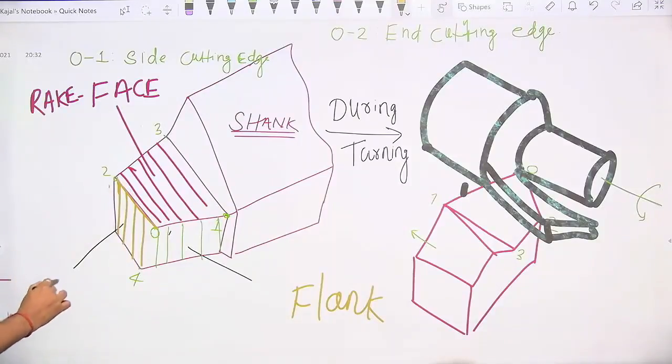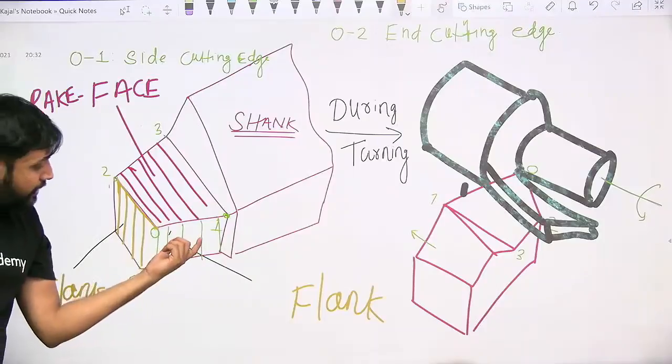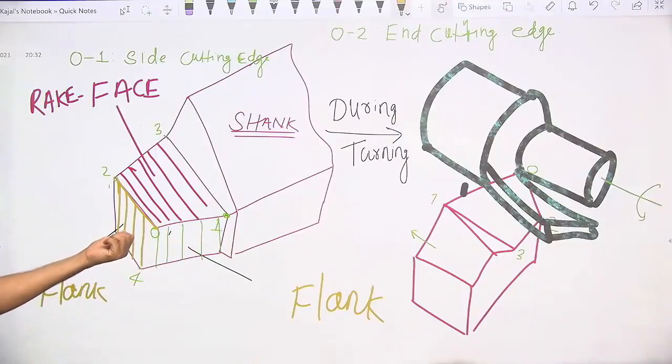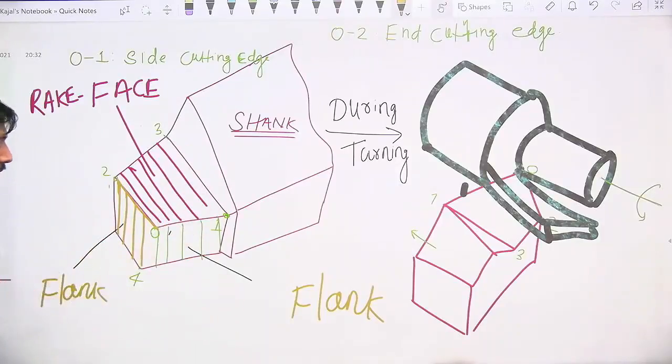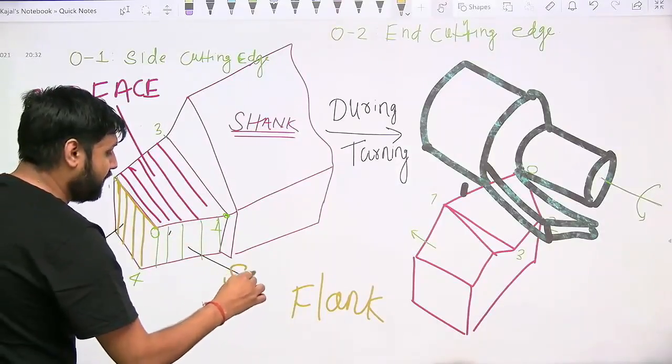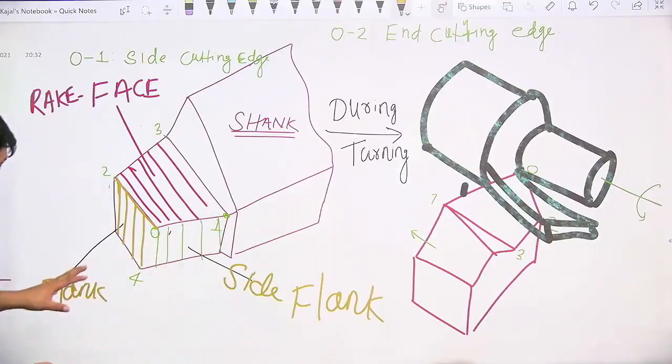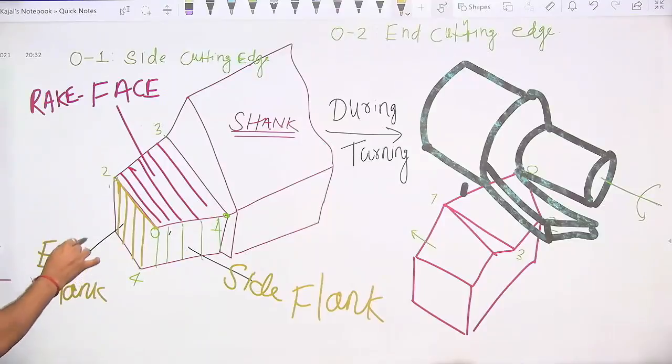Out of the green color flank and this yellow color flank, which one is at the side? The one below the side cutting edge. That is why this is termed as side flank, and this flank just below the end cutting edge is termed as end flank.